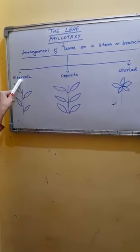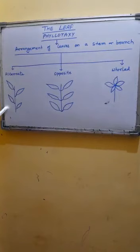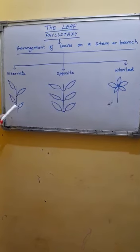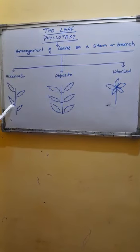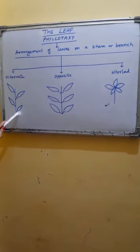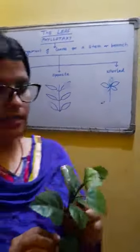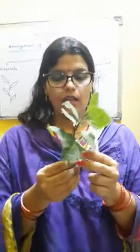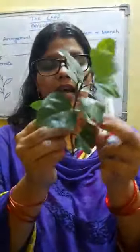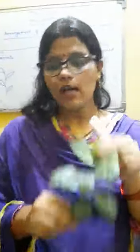The first one is alternate. As the name suggests, here the leaves are arranged on the stem in an alternate manner. It means at one node, only a single leaf arises, and from the next node, on the opposite side, another leaf arises. One on one side and the next on the other side, and likewise so on. The example of alternate phyllotaxy is China rose, where you can see one leaf arising from one part and another leaf arising from the next node on the other side — going in an alternate manner.